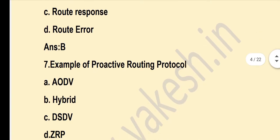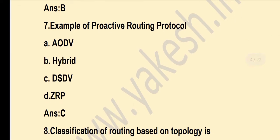Next question: Example of a proactive routing protocol? Option C — DSDV — is the correct answer.